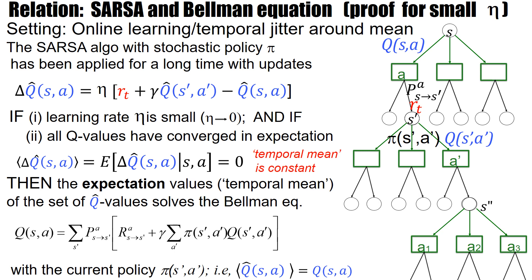Welcome to this last video of this lecture series. I want to sketch a proof for the little theorem that we saw at the end of the section on SARSA. So what's the setting? We have the SARSA algorithm with some stochastic policy P, and we assume that it has been applied for a long time. Here it's just the standard update rule — I've added hats to indicate that in SARSA I have a fluctuating quantity Q-hat of SA.